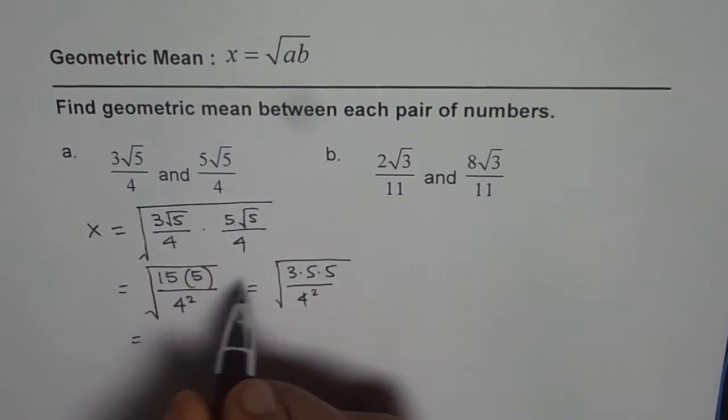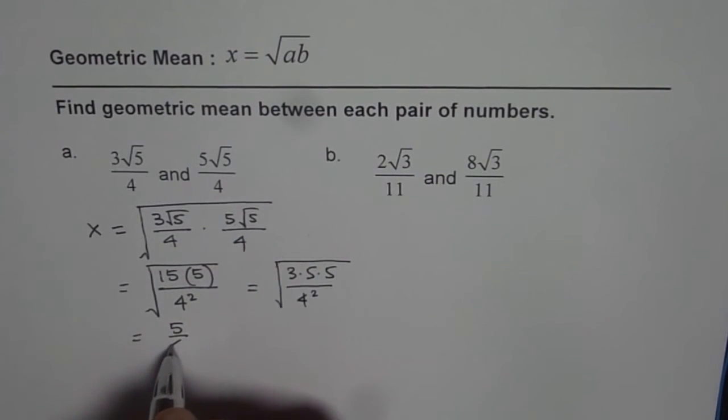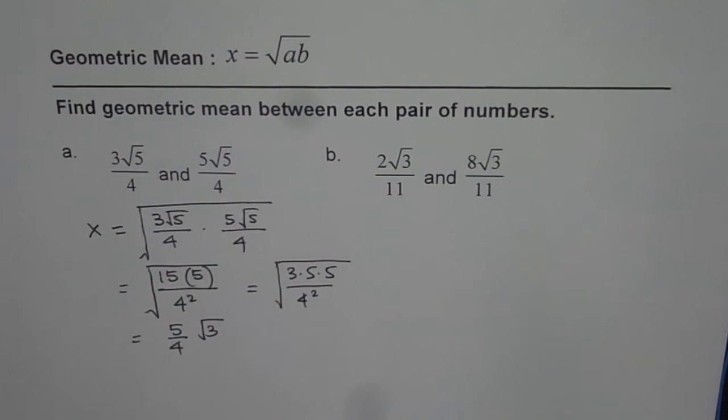Instead of multiplying then doing square root, we can look at this number in this fashion. So we can write this as 5 over 4 square root of 3. That is how you can quickly answer this question.